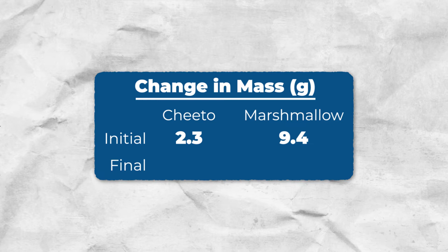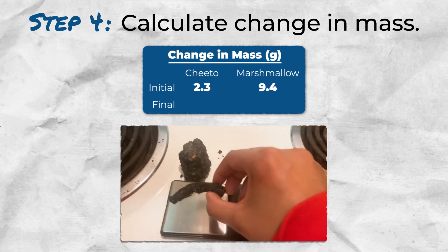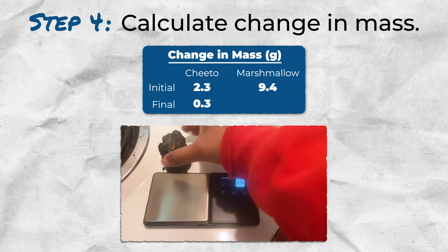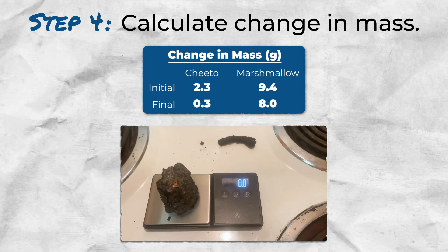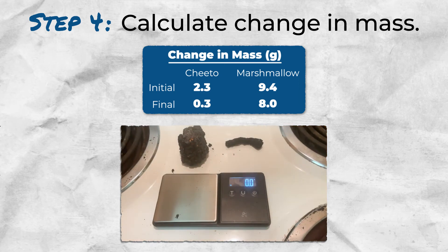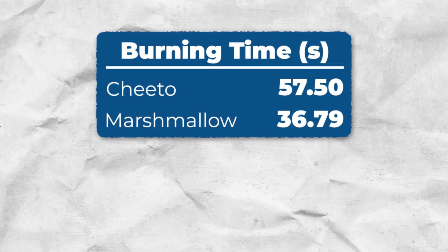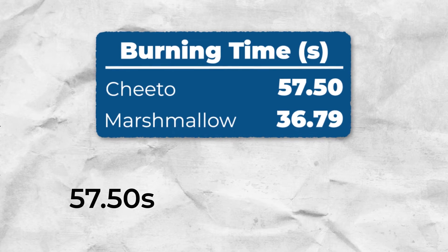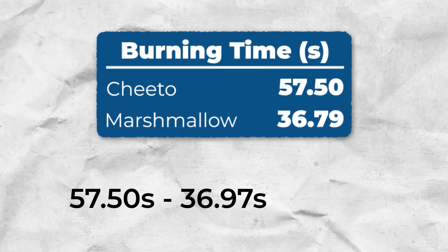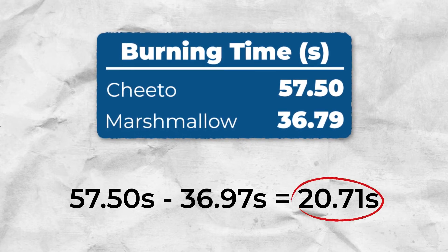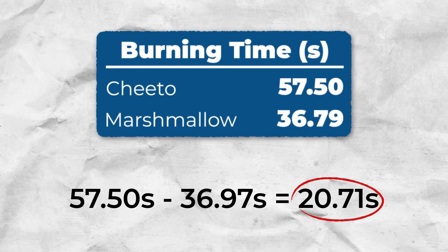We place the burnt Cheeto on the scale and it reads 0.3 grams. The burnt marshmallow weighs 8.0 grams. We record both final masses and subtract from the initial mass. Looking at our data, the Cheeto took 57.5 seconds to burn while the marshmallow took 36.79 seconds — the Cheeto burned 20.71 seconds longer, which supports that the Cheeto has more calories than the marshmallow.